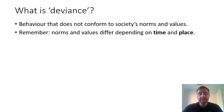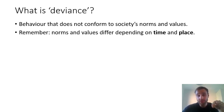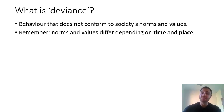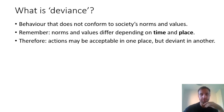But again, it's really important to remember that norms and values differ depending on time and place. So what is normal in one social situation might not be normal in another, and therefore you might have a behaviour that is perfectly acceptable in one place but deviant in another. I'm going to give you some examples of that.